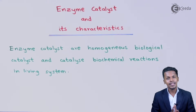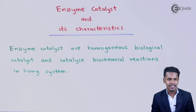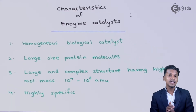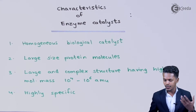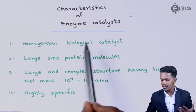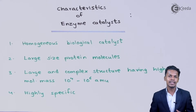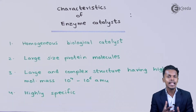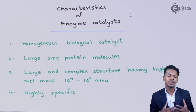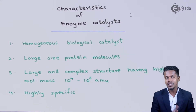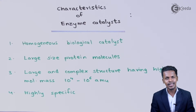Now let us understand the characteristics of the enzyme catalyst. The first characteristic is that it is a homogeneous biological catalyst. This kind of catalyst takes part in biochemical reactions in our body or in other living organisms. Enzymes are very much homogeneous to the other reacting mixtures in our body, and that is how the reaction occurs.